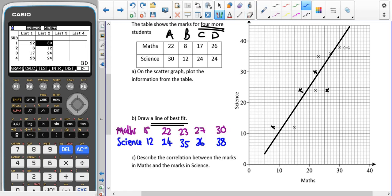So all I've done is I have read off the five points and made a note of them here. Then in my calculator, I have put the data that was given to me in the table. You can see here 22, 8, 17, 26. I've put the math scores into list one and 30, 12, 24, 24, I've put the science scores into list two. And I've also put in the new data that I've read off: 15, 12, 22, 24, and so on. So I now have all the data points that are on the scatter diagram in my calculator.